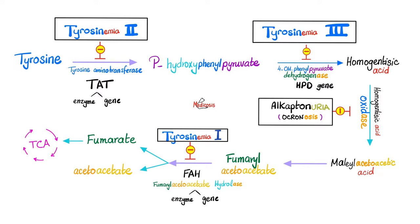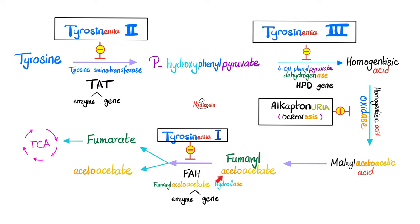Then by another enzyme it will give us homogentisic acid. If you watched my previous video on alcaptonuria, you are familiar with homogentisic acid oxidase, which is deficient in alcaptonuria. Homogentisic acid oxidase will oxidize homogentisic acid into maleylacetoacetic acid, which will be broken down into fumarylacetoacetate. Fumarylacetoacetate, by an enzyme called fumarylacetoacetate hydrolase, breaks the bond in the presence of water into fumarate and acetoacetate — both sources of energy.